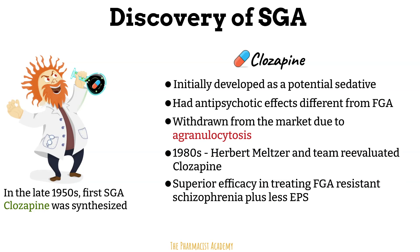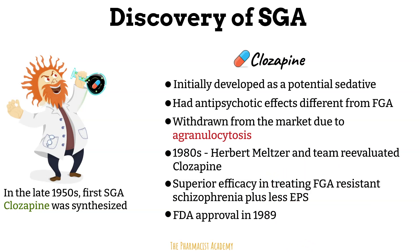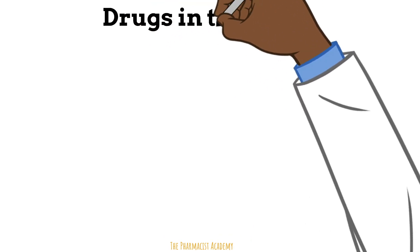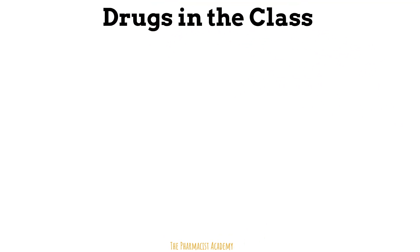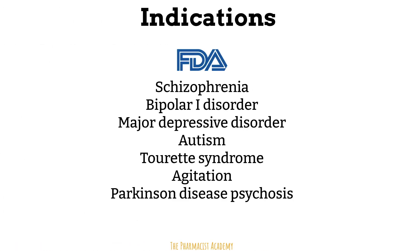Despite the risk of agranulocytosis, which required regular blood monitoring to ensure patient safety, clozapine was approved by the FDA in 1989 for treatment-resistant schizophrenia. This led to further research and the eventual development of other drugs in the class — second generation antipsychotics, also known as atypical antipsychotics. Here are examples of some of the other drugs in the class, with the generic name and brand name in parentheses. These agents have the following indications as listed. Not included but worth mentioning is treatment-resistant schizophrenia, for which clozapine is preferred, though other agents can be used as well.